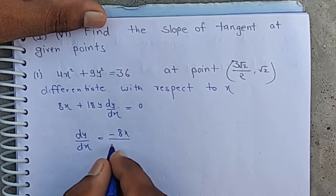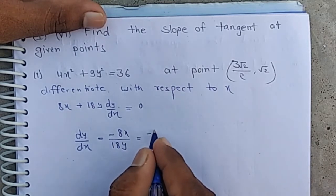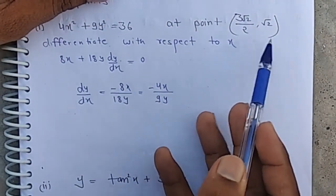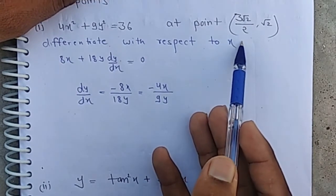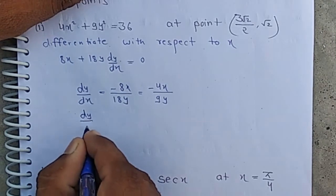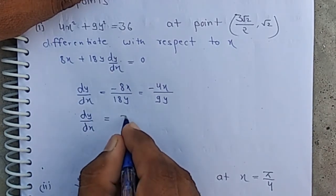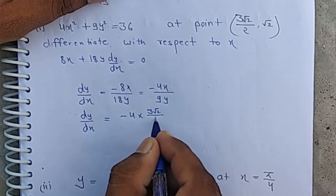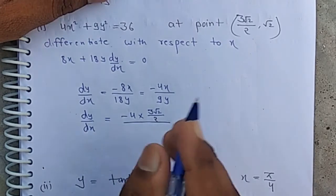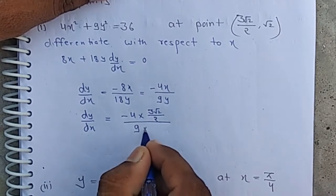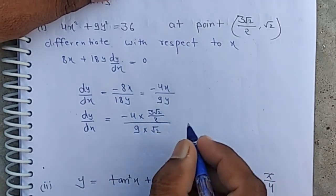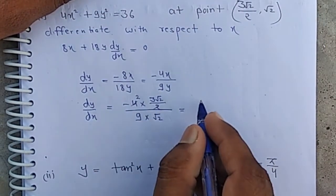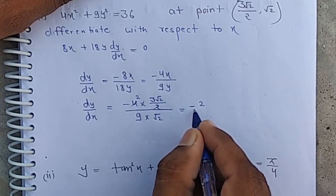So dy/dx equals −8x/18y, which simplifies to −4x/9y. Now putting the value of (x1, y1) = (3√2/2, √2), dy/dx equals −4 times x divided by 9 times y, which gives us −2/3.